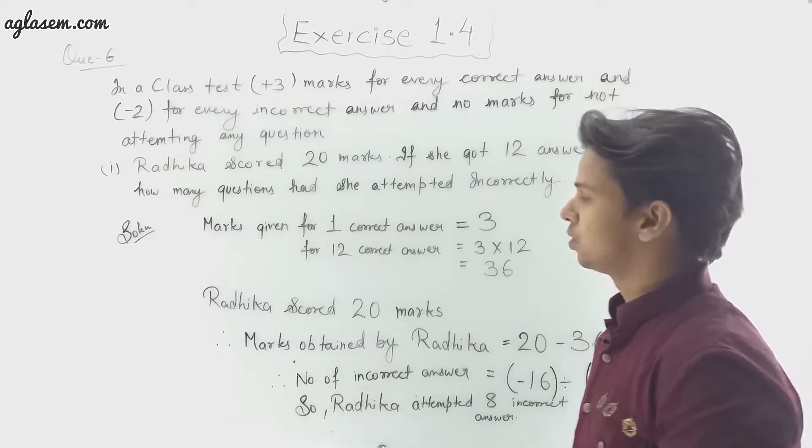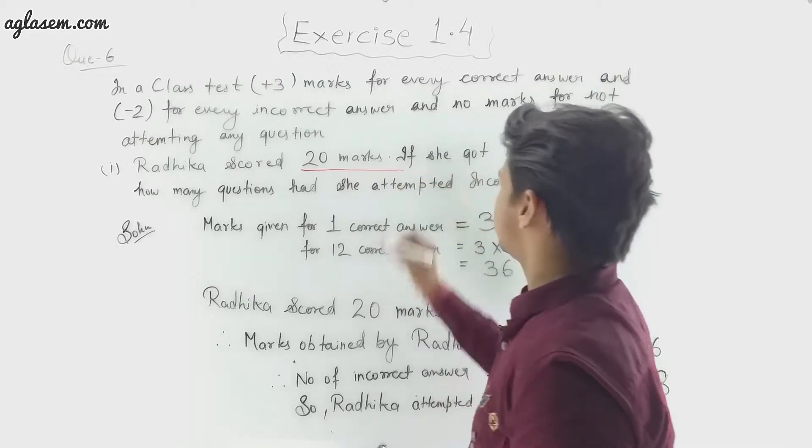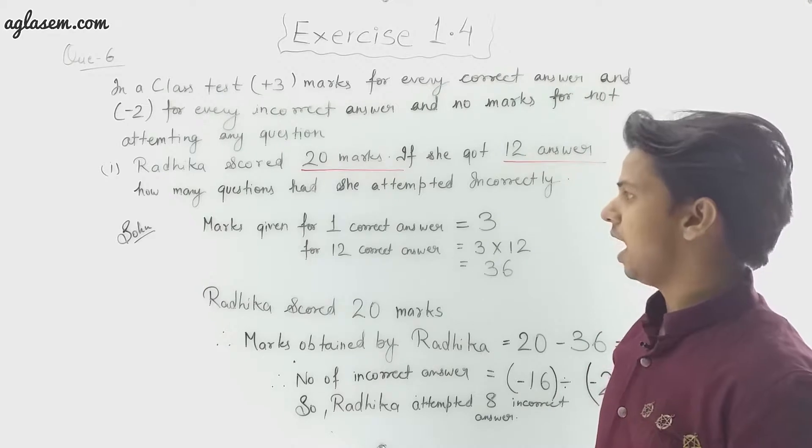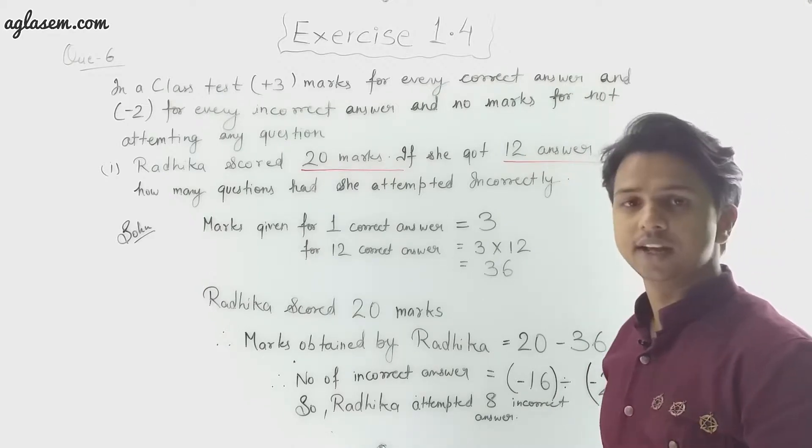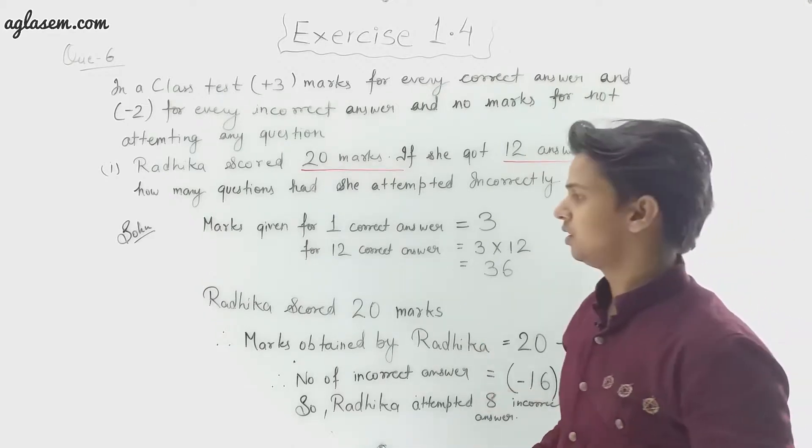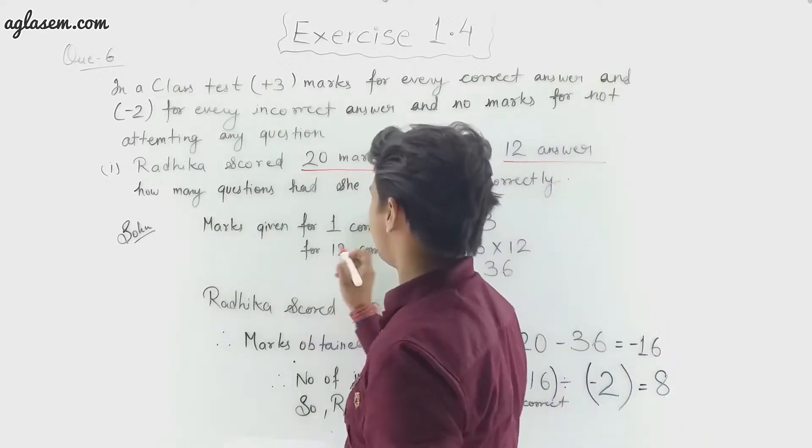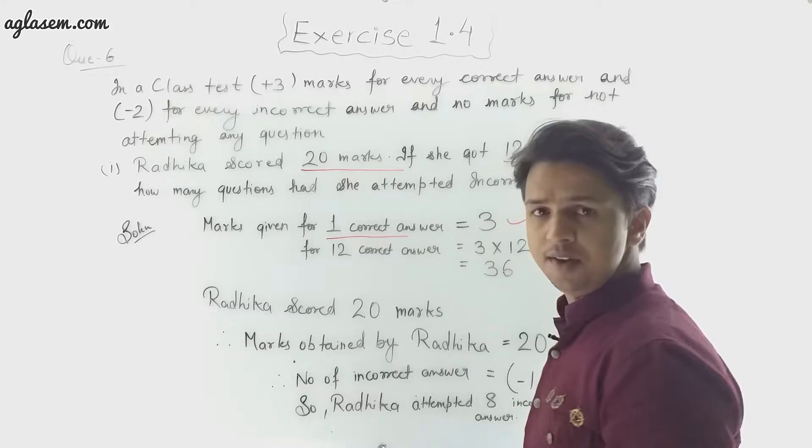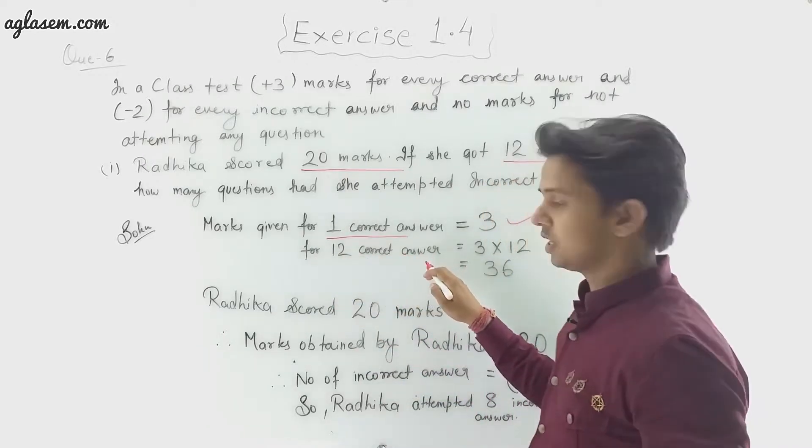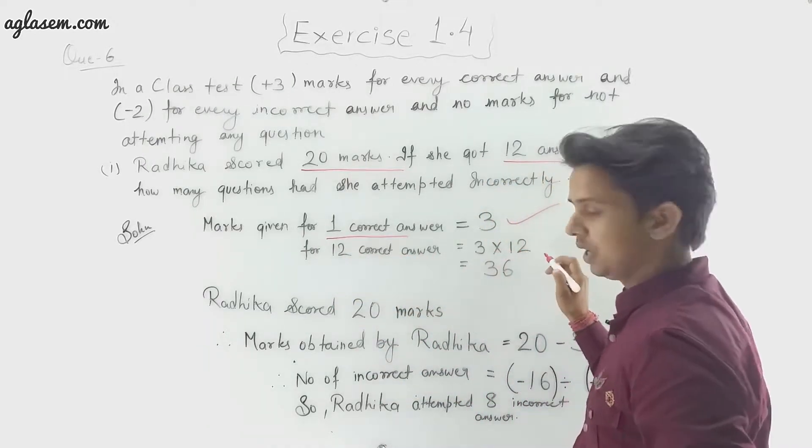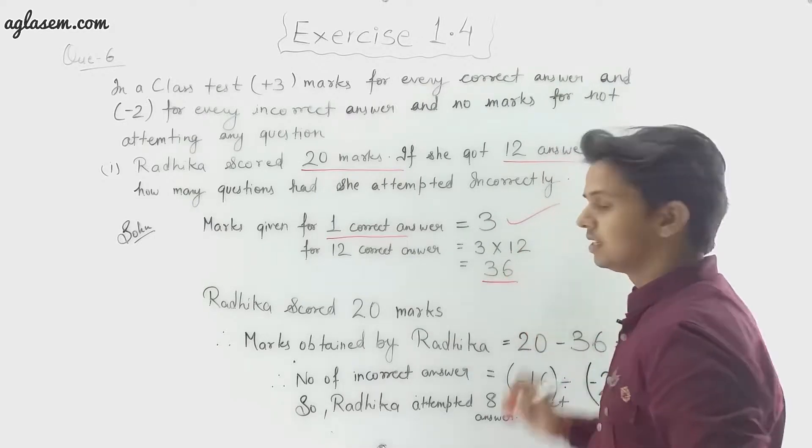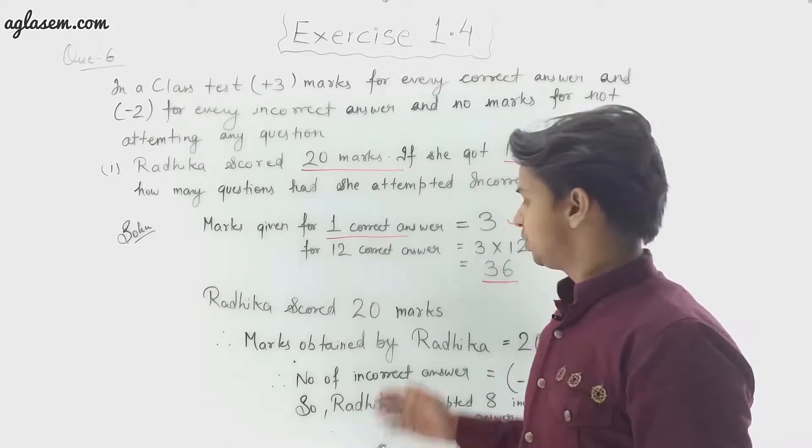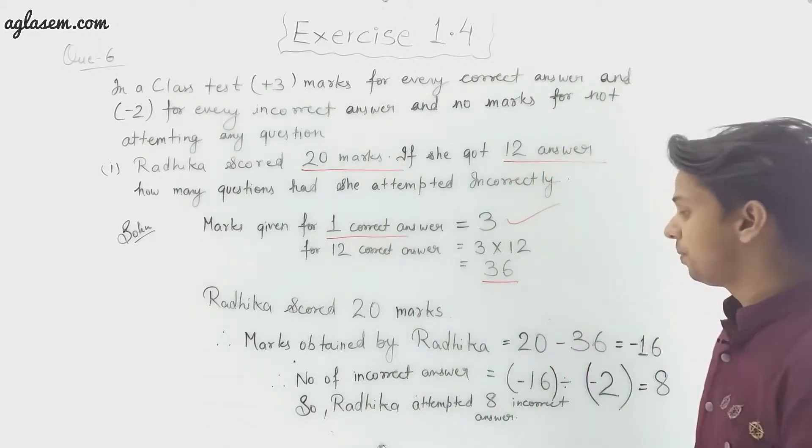Let's start with the solution. Marks given for one correct answer is 3, so for 12 correct answers, marks will be 3 × 12 = 36. So Radhika scored total marks, that is 20 marks.